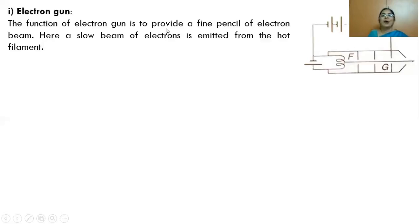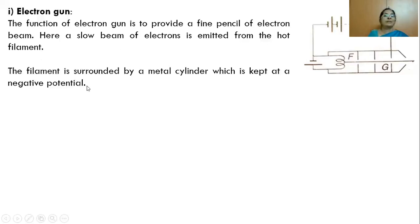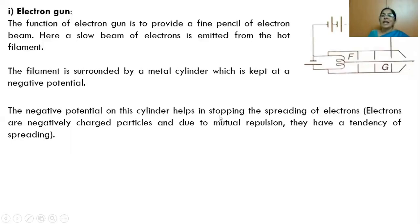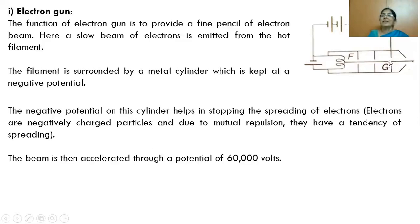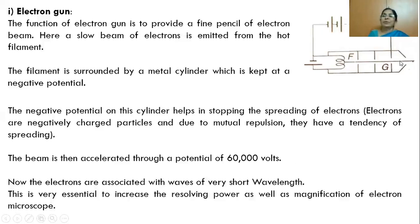The function of the electron gun is to provide a fine pencil of electron beam. A slow-moving electron is emitted from the heated filament. The filament is surrounded by a metal cylinder kept at negative potential, which collimates the electrons into a thin pencil beam. The beam is then accelerated using a high tension battery of 60,000 volts. We know that when electrons move with high velocity, they are associated with matter waves of short wavelength. We need to generate matter waves of very short wavelength because resolving power is inversely proportional to wavelength.